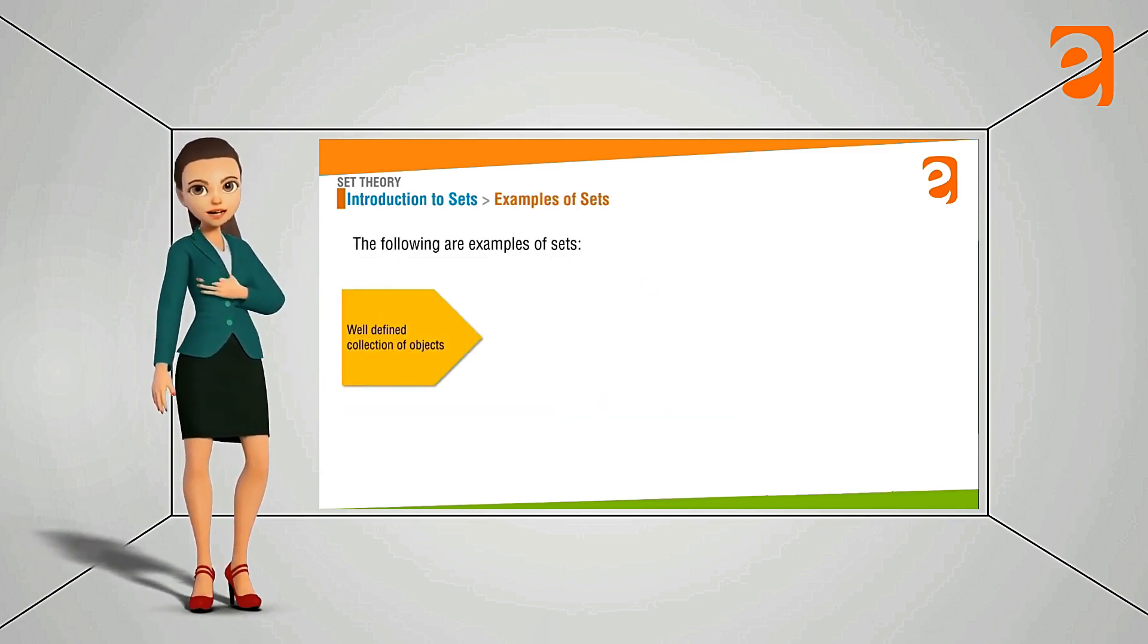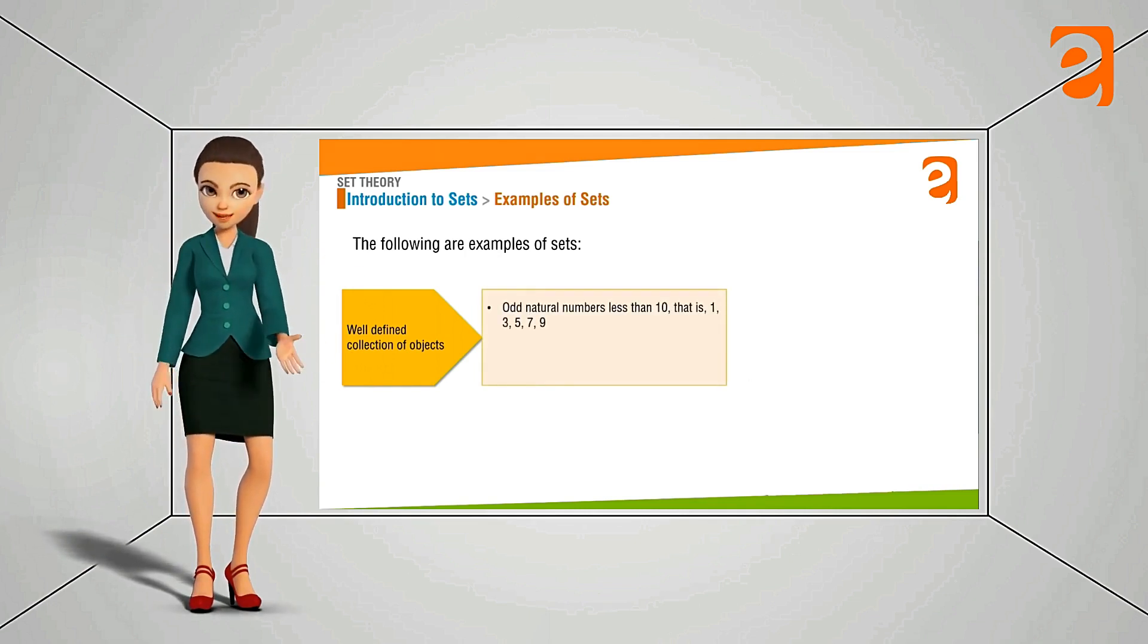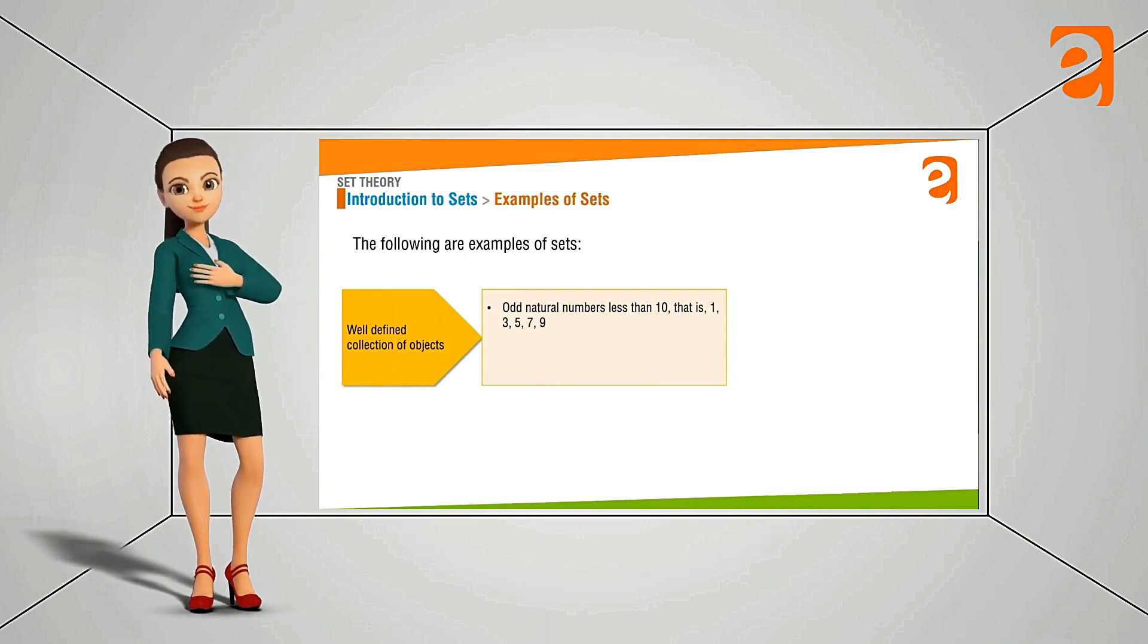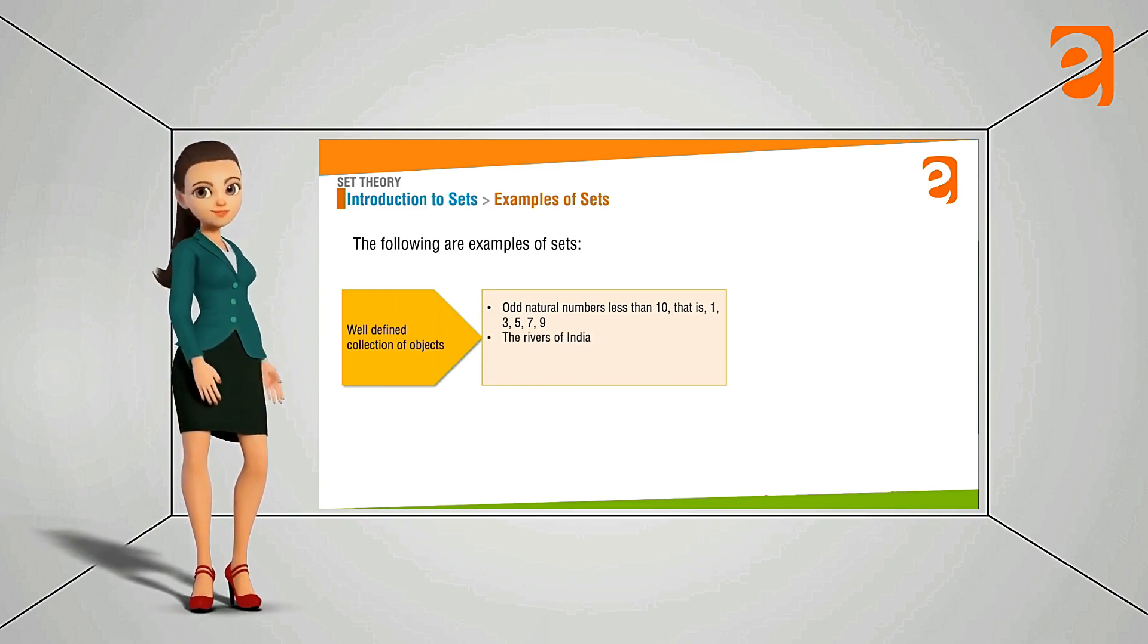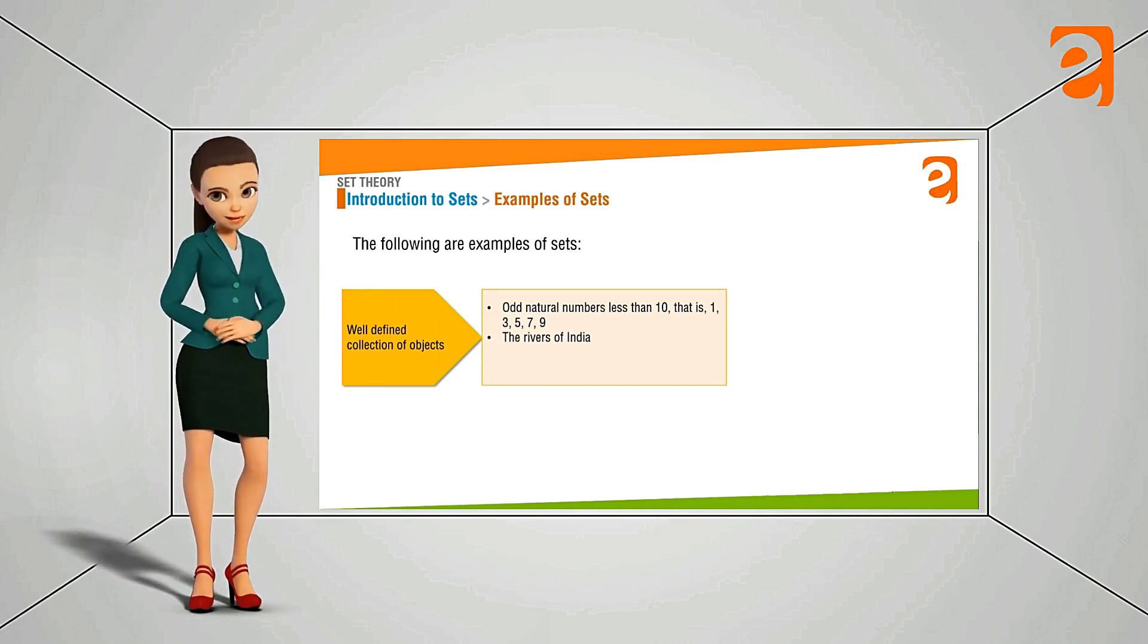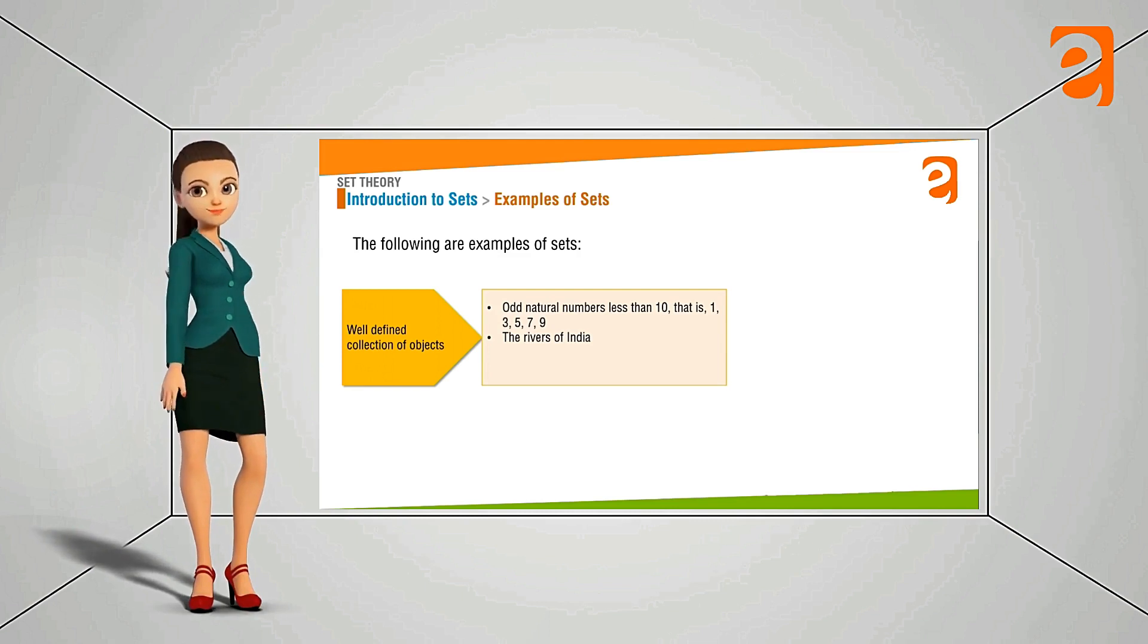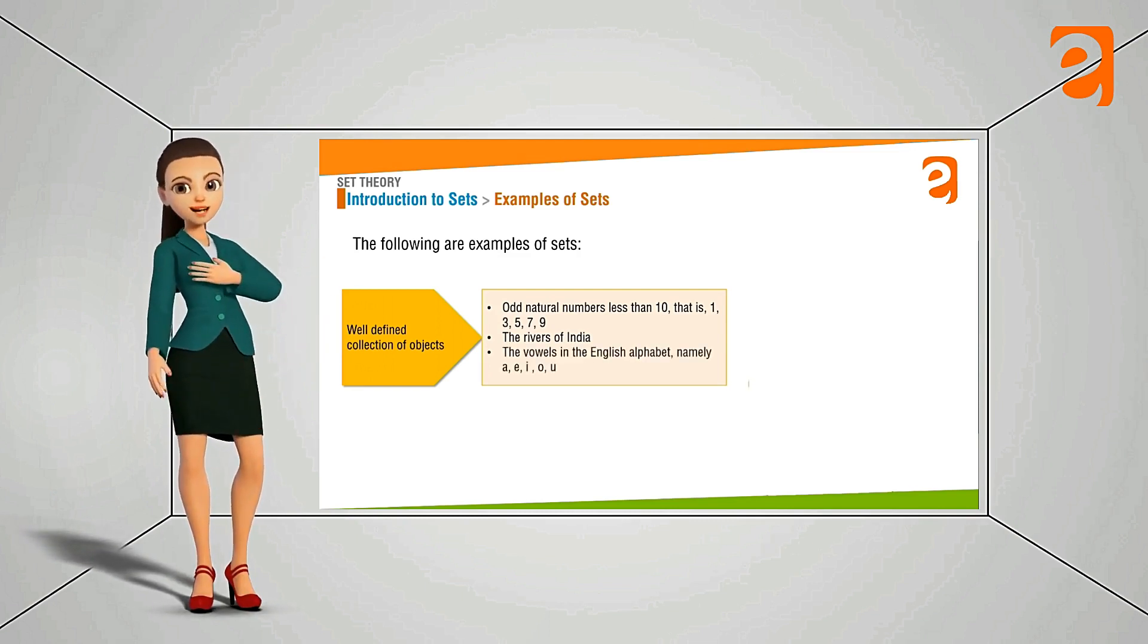Let's see some more examples for the sets. We said that set is a well-defined collection of objects. So we can say that odd numbers less than 10, it is a well-defined collection of objects. What are the odd numbers less than 10? It is 1, 3, 7, 9. Then the rivers of India, this is also well-defined. If we are going to make a chart for this one we can figure out the rivers of India, put it in one curly bracket. We can say that this is a set.